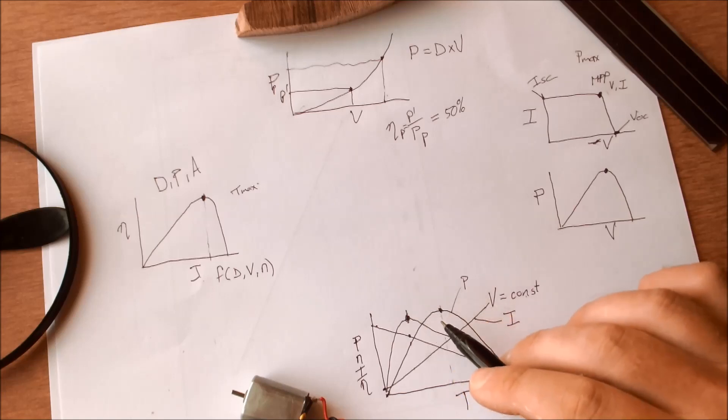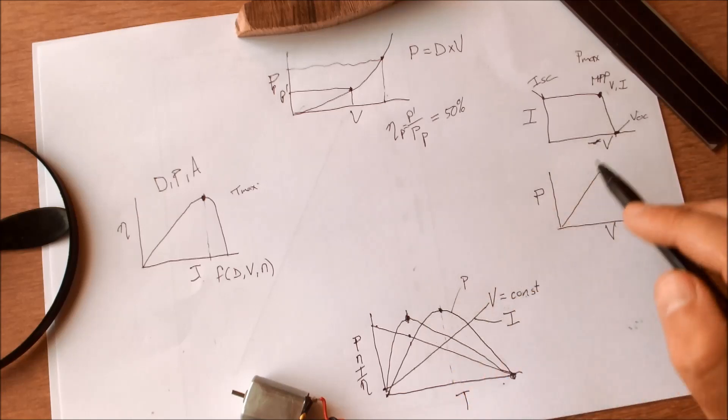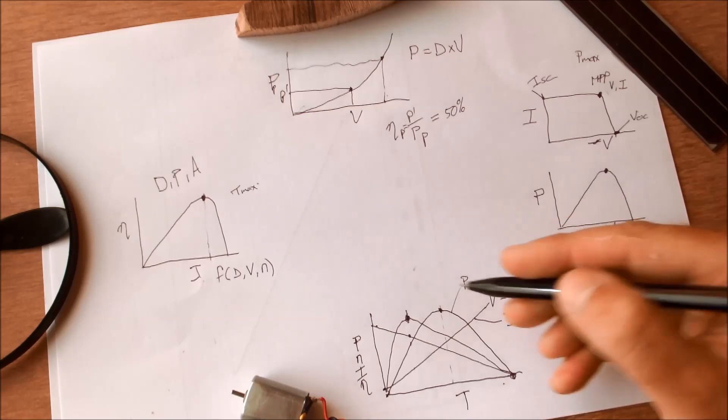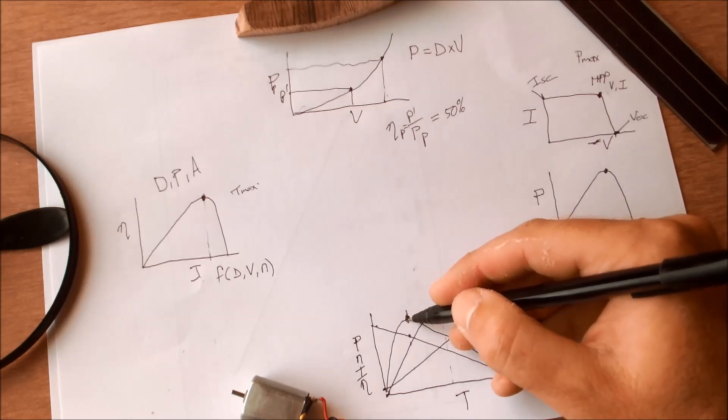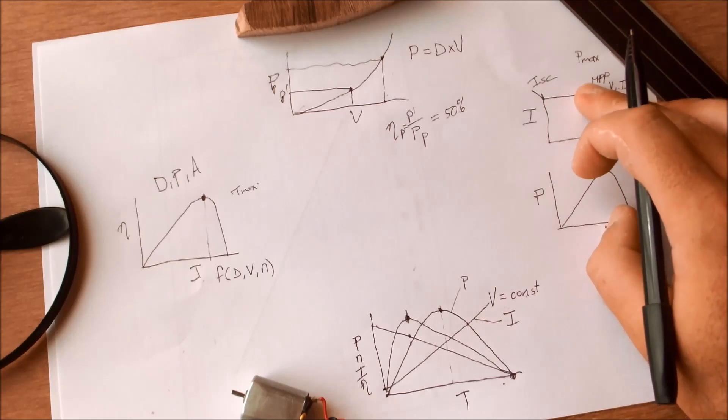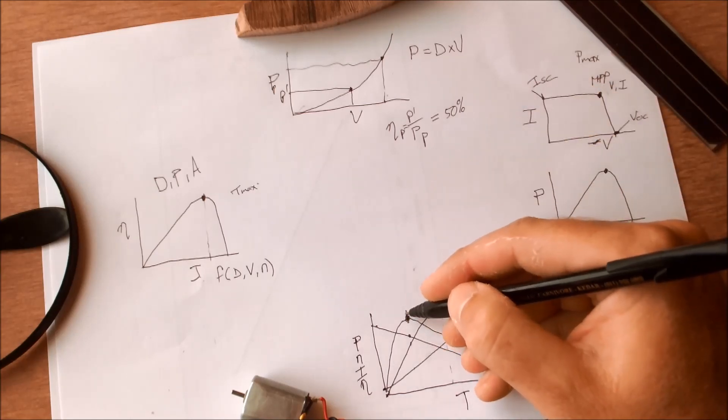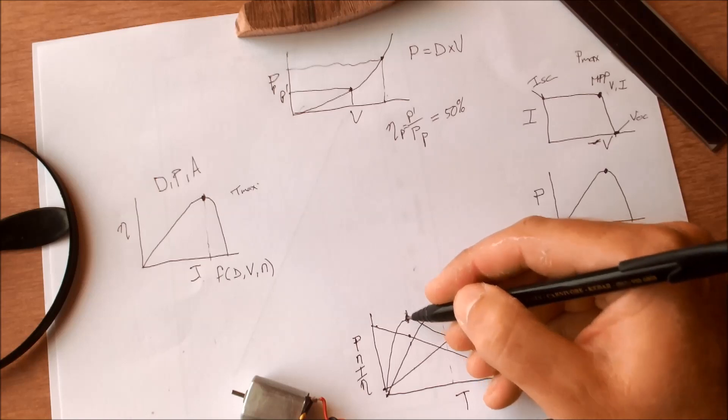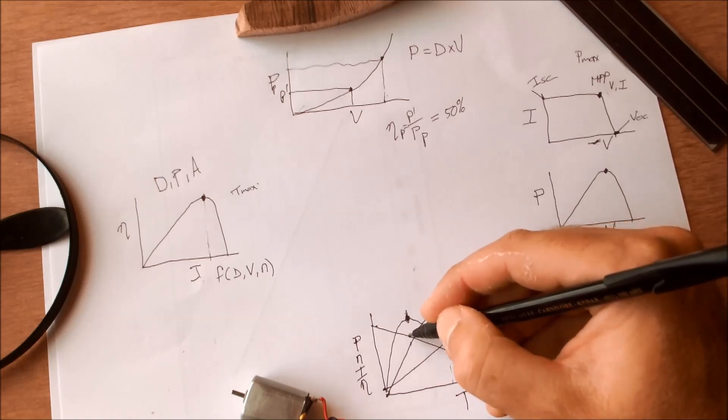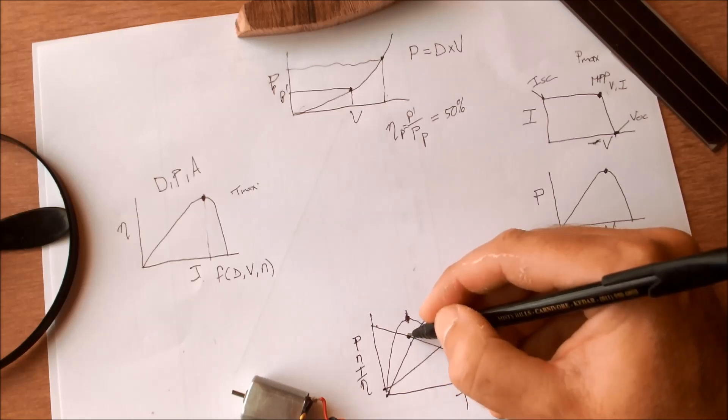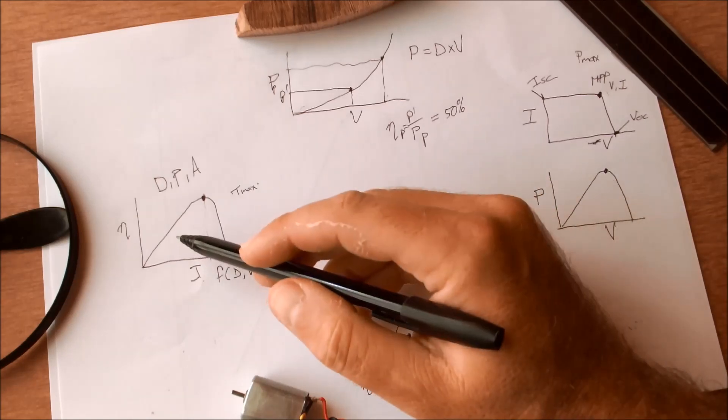Once you've found a motor that is a good match for the solar panel in other words the motor would absorb all the available power from the panel at exactly the point where itself operates at maximum efficiency you can then use that rotational velocity as the design input for selecting a propeller.